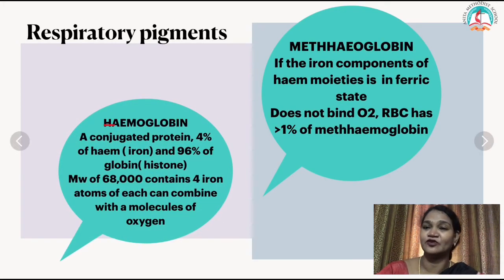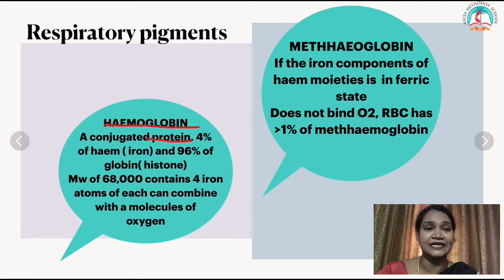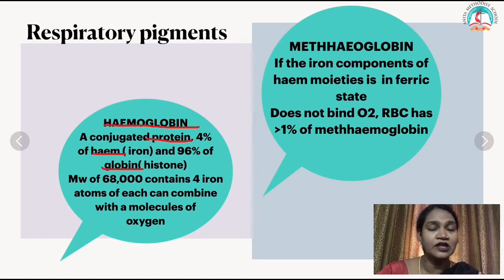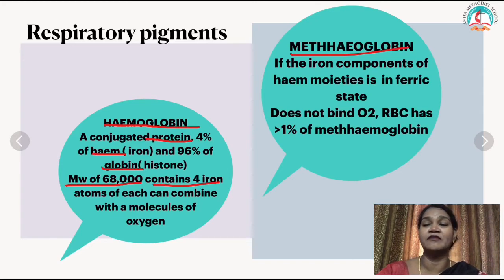Hemoglobin is a pigment that gives red color to the blood. It is a conjugated protein — 4% is heme (the iron particle) and 96% is protein (histone). Its molecular weight is about 68,000. It contains four iron atoms that combine with oxygen molecules. Methemoglobin, by contrast, does not combine with oxygen and exists in the ferric state.